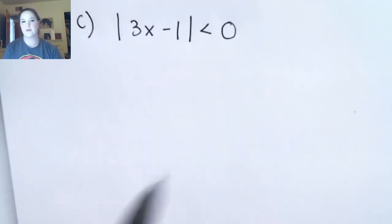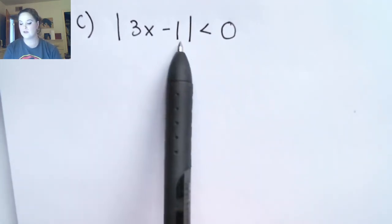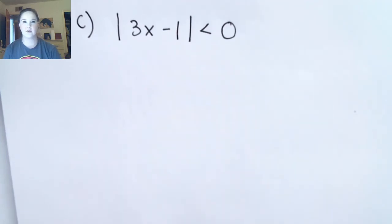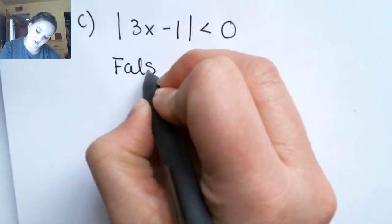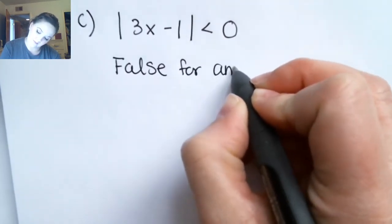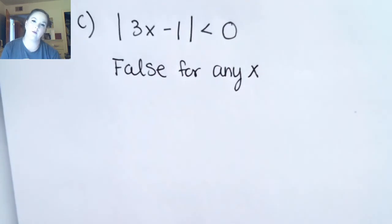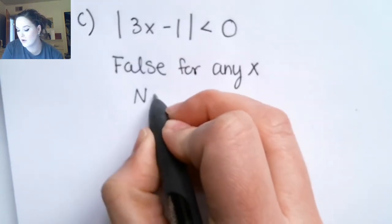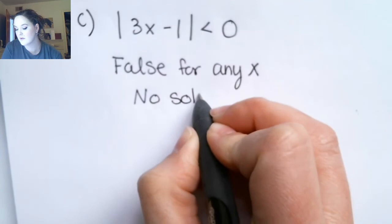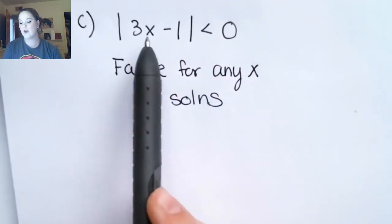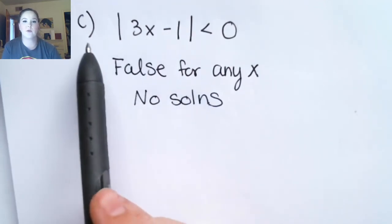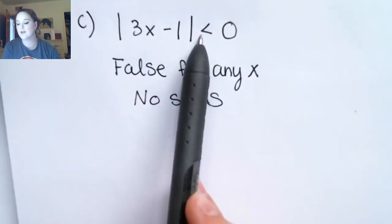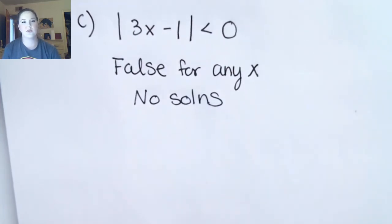The absolute value is less than zero — when can that happen? Remember, absolute value is a distance. It can't be less than zero. You can't have a negative distance. So this is false for all values of x, which means there are no solutions. Any value of x you plug in, you'll either get zero or a positive number from the absolute value — you can't get something less than zero. So there are no solutions to this.